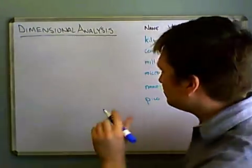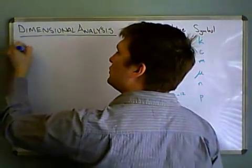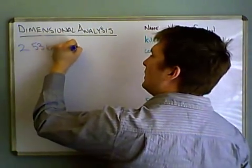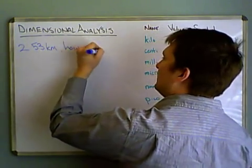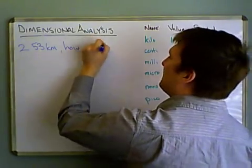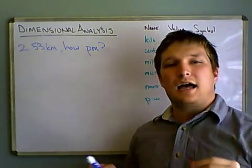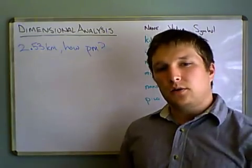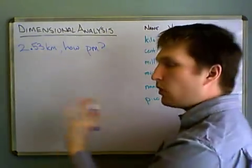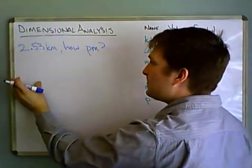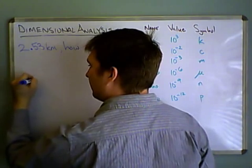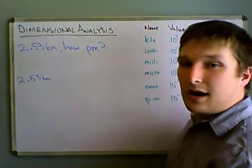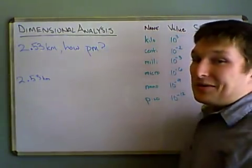So okay, let's go ahead and do a problem. Let's say I have 2.53 kilometers, and I want to know how many picometers is that. So the question is, convert 2.53 kilometers into picometers. Whenever we're doing dimensional analysis, we start with what we know, and we write that over here on the left. So we know this is given, 2.53, and always make sure you include your units, because as these get more complicated, you want to make sure you have your units labeled.